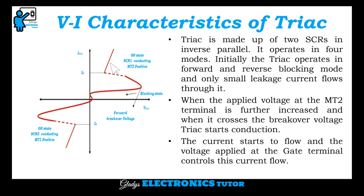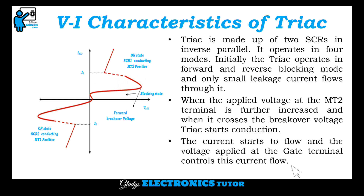Next, we will see about the VI characteristics of TRIAC. TRIAC is made up of two SCRs in inverse parallel and operates in four modes. Initially, the TRIAC operates in forward and reverse blocking mode — only small leakage current flows through it. When the applied voltage at MT2 is further increased and crosses the breakover voltage — the forward breakover voltage or the negative breakover voltage — the TRIAC starts to conduct. The current starts to flow and the gate terminal voltage controls this current flow.